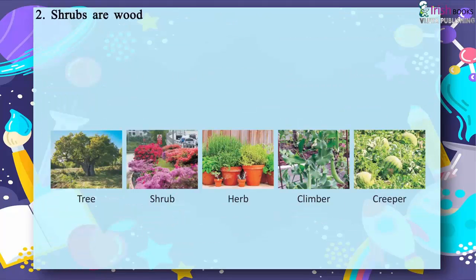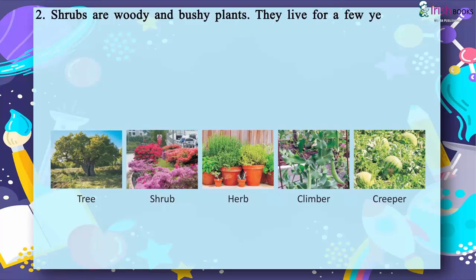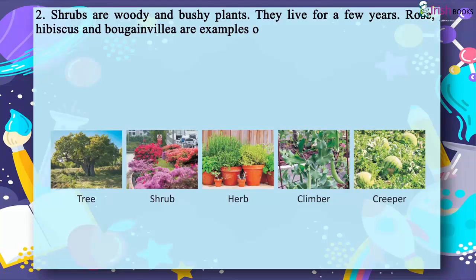2. Shrubs are woody and bushy plants. They live for a few years. Rose, Hibiscus and Bougainvillea are examples of shrubs.